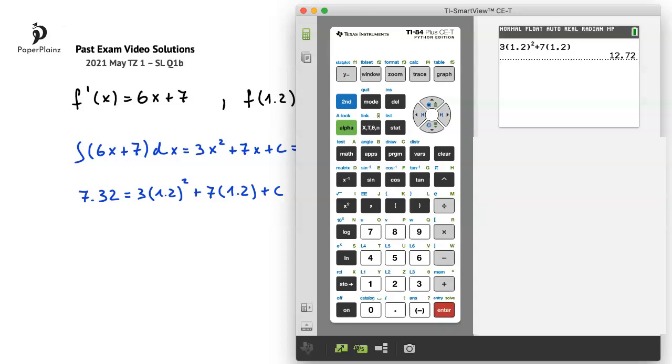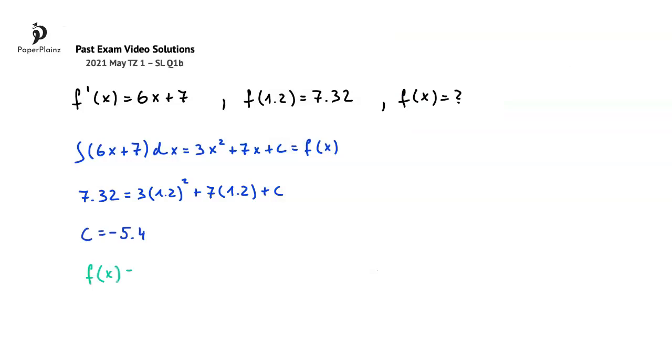To get c, I will subtract 12.72 from 7.32. Pressing enter once again, we get negative 5.4. Therefore c is negative 5.4, hence fx is equal to 3x squared plus 7x minus 5.4.